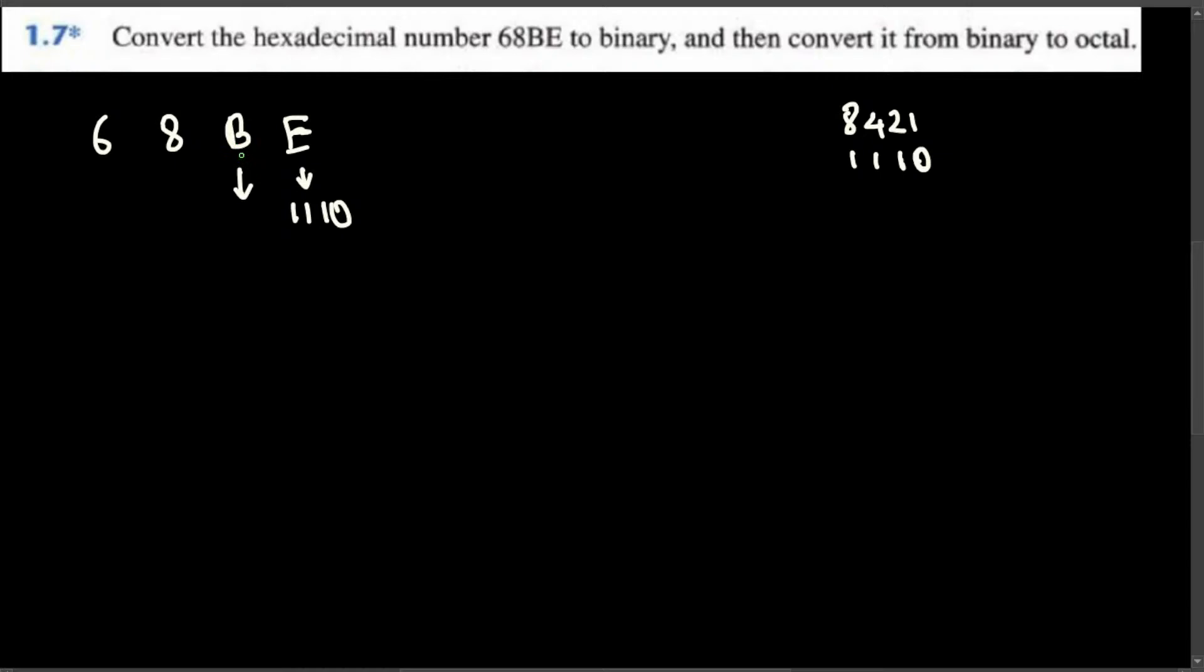So like that, this one becomes 1110 for E. B is 11 because in hexadecimal after 9, A is 10, B is 11. So to make 11, we have to have an 8 and a 2 and a 1, so 1011.